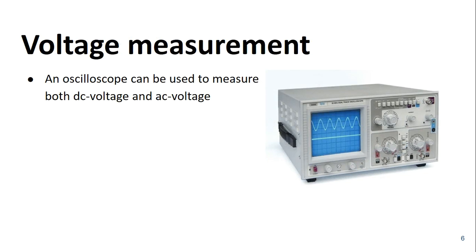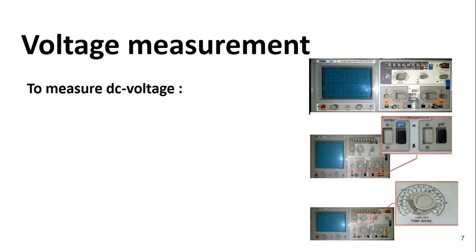Let us discuss about the measurement of voltage using a CRO. A CRO can be used to measure both DC voltage as well as AC voltage of the input signal. These are the pictures showing the front panel of the CRO where we can make necessary adjustments before applying the input signal.